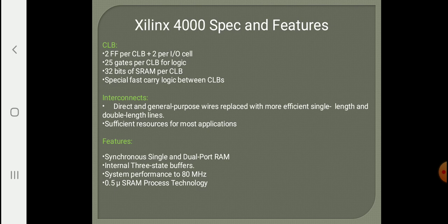It uses fast SRAMs to store internal data for the function generator as well as the output storage unit. Regarding interconnects, there are two types: direct and general purpose interconnect, where you can connect adjacent CLBs or from a longer range. Other features include synchronous single and dual port RAM to support input functionalities, an internal three-state buffer, a clock speed of about 80 MHz, and it uses 0.5 micrometer SRAM technology.